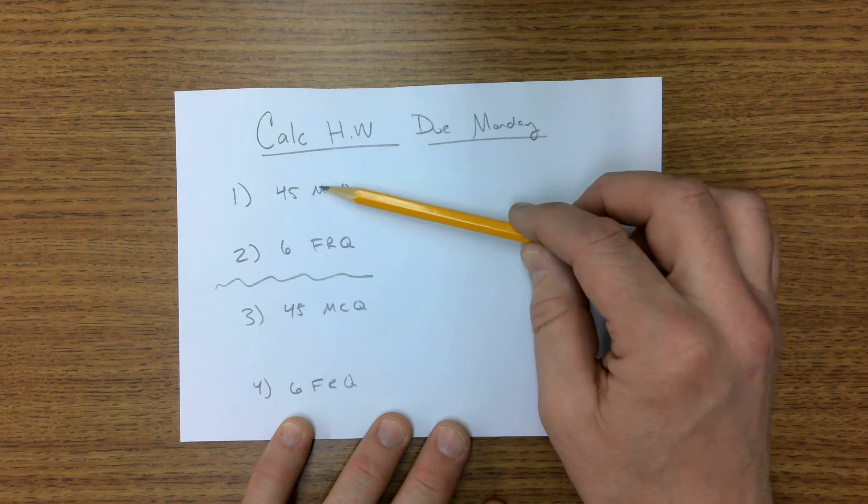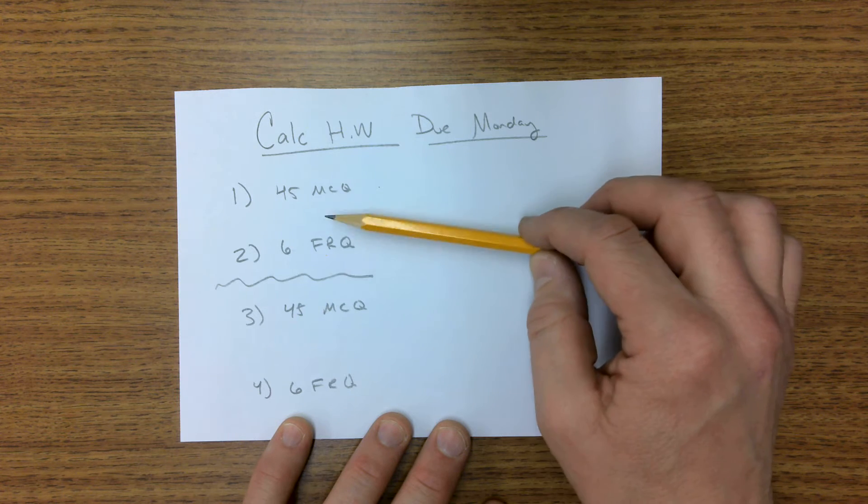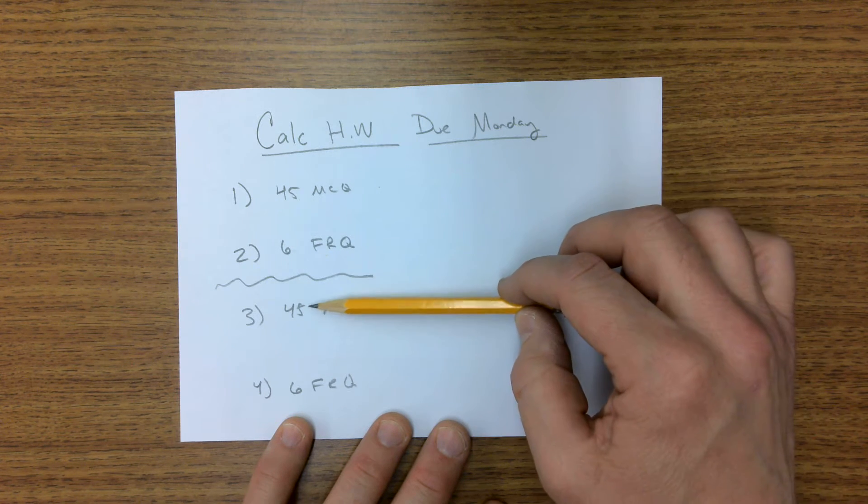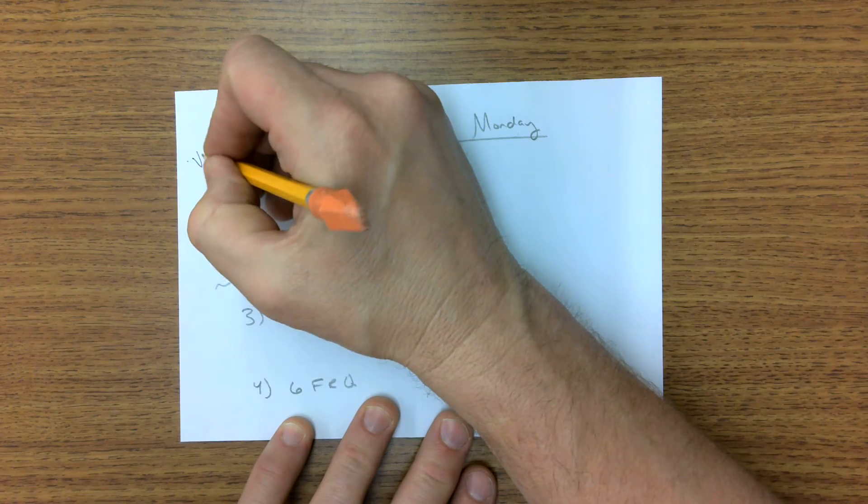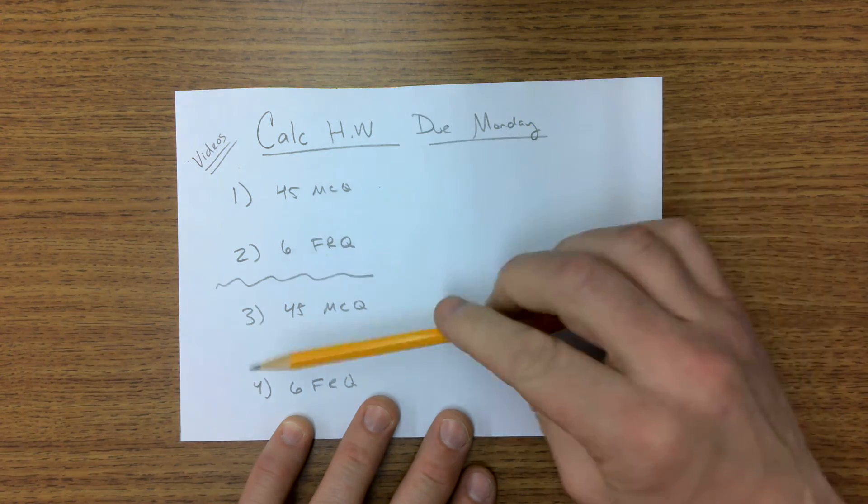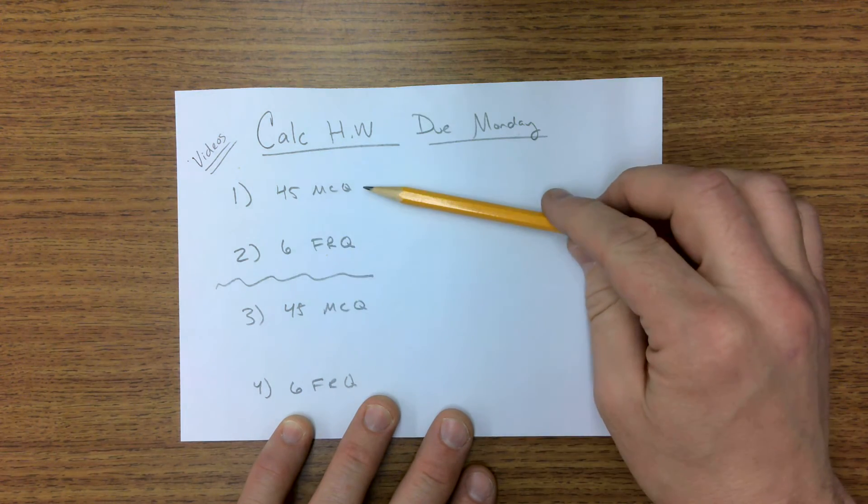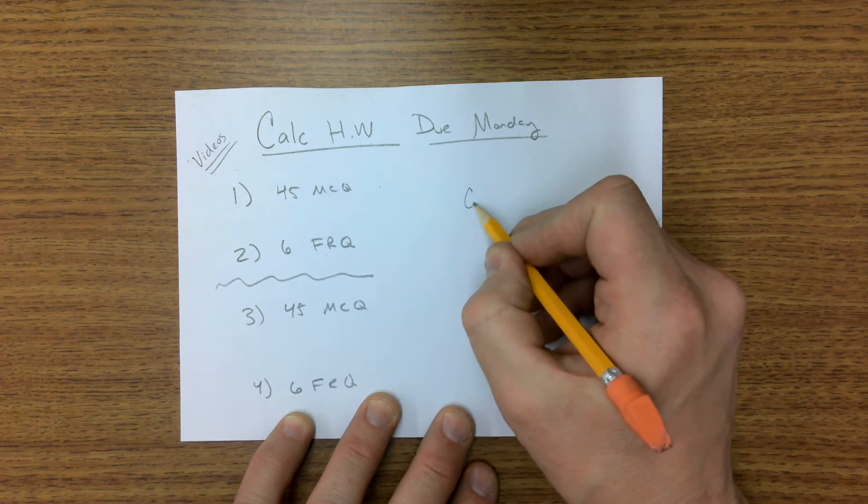Assignment number one and two are 45 questions here, then the six free response, just like you're going to do on the AP test, and then 45 questions and six. And you can get to all of them. All of them have videos, so they are all explained in depth with all the work and the correct answer.